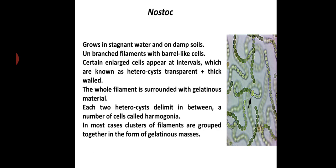This Nostocaceae grows in stagnant water and on damp soils. The filaments are unbranched with barrel-like cells. Certain enlarged cells appear at intervals, which are known as heterocysts. Heterocysts are transparent and thick-walled. The whole filament is surrounded with gelatinous material.